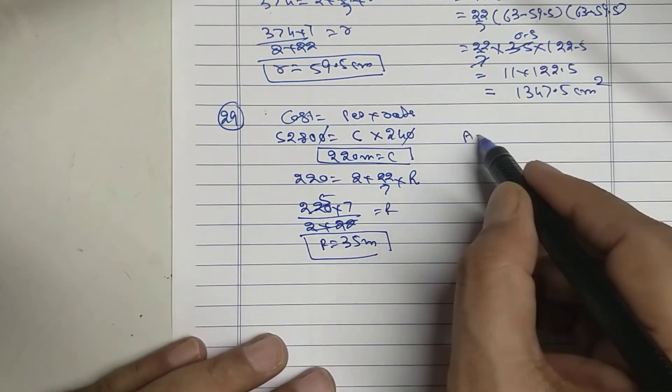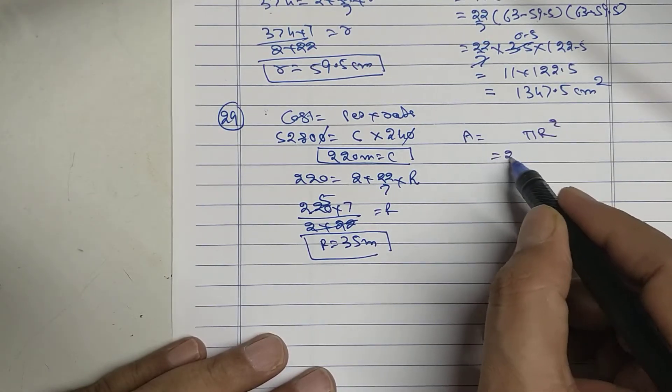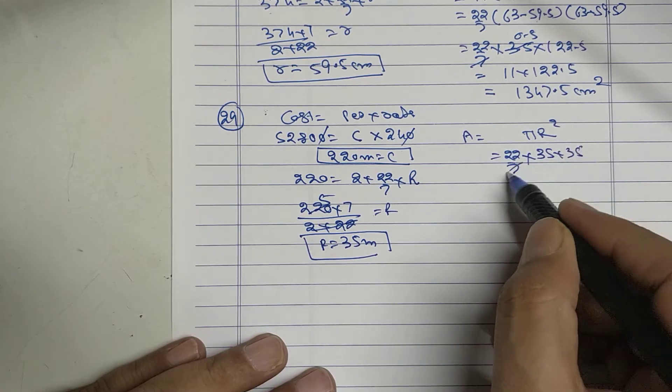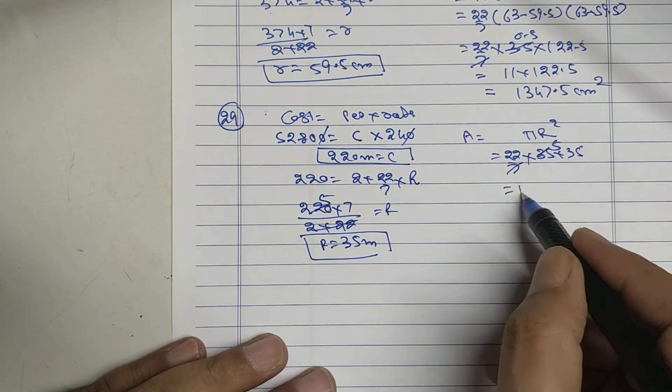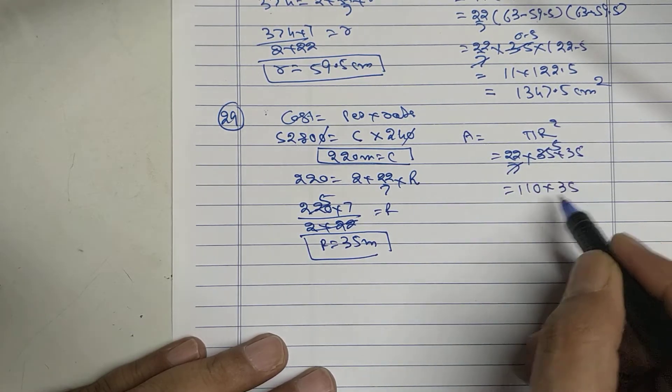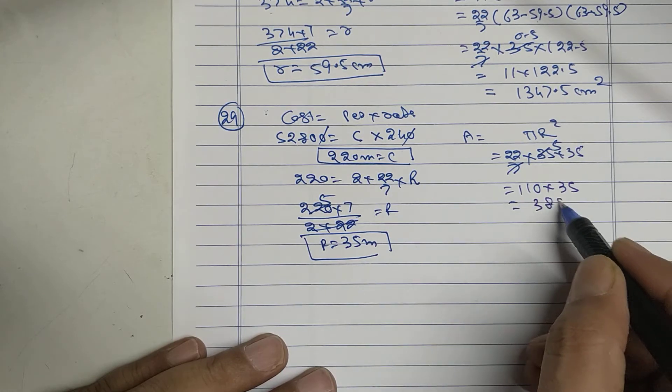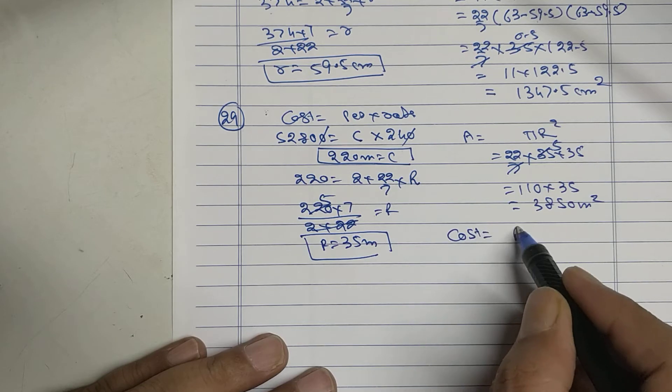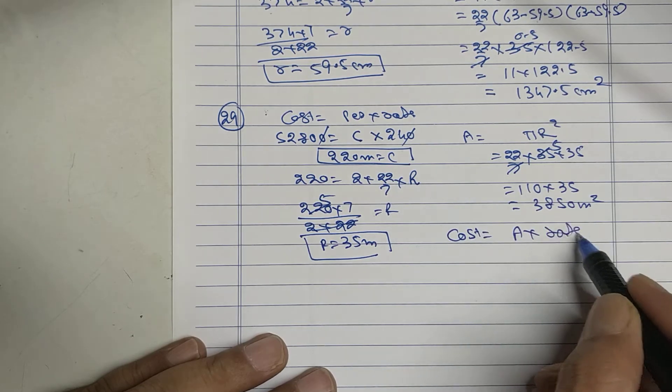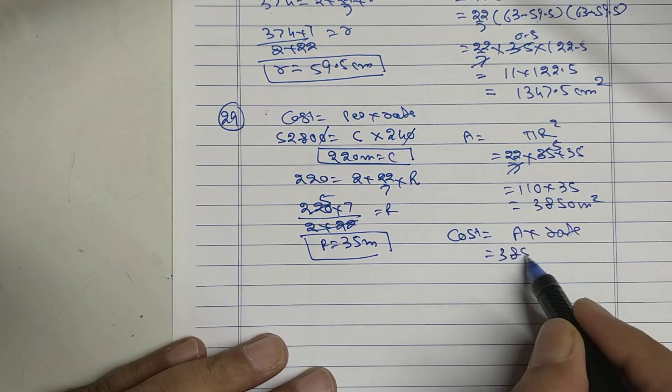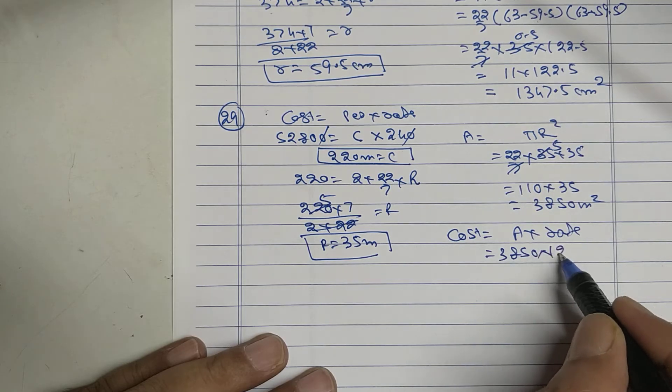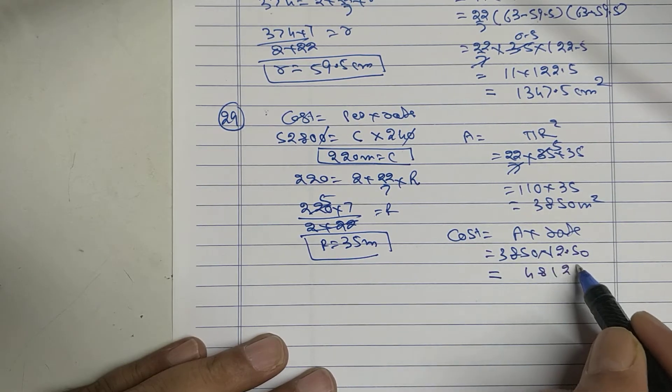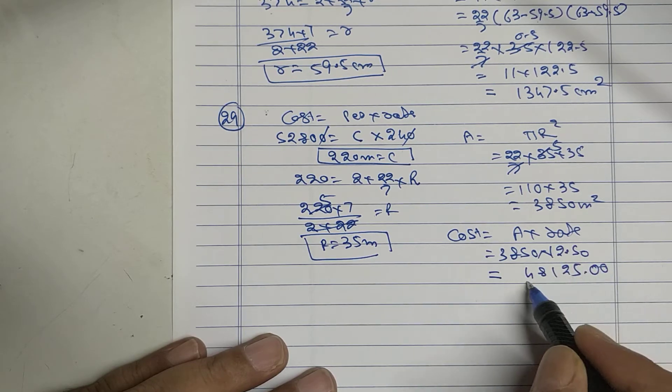Now find the area of field: pi r square, 35 into 35, 110 into 35 equals 3850 meter square. Cost of plowing: area into rate, 3850 into 12.50. Multiplying: 48,125 rupees.